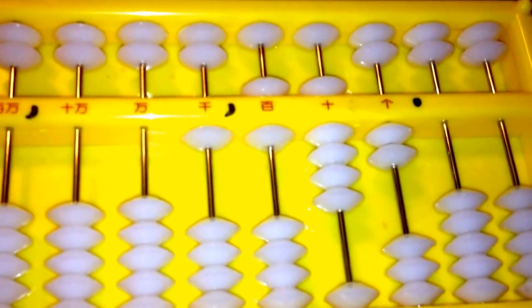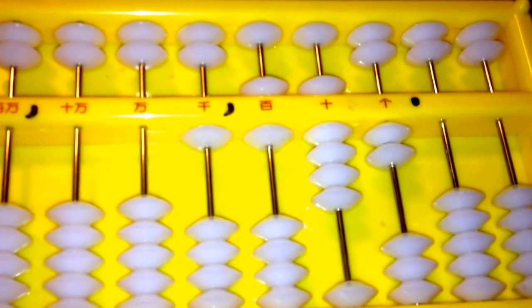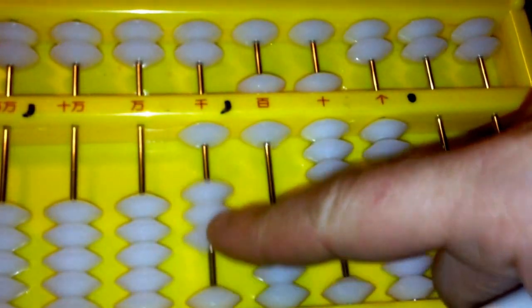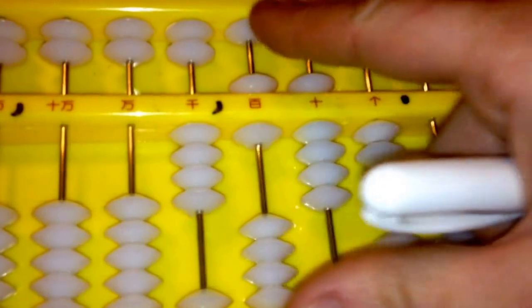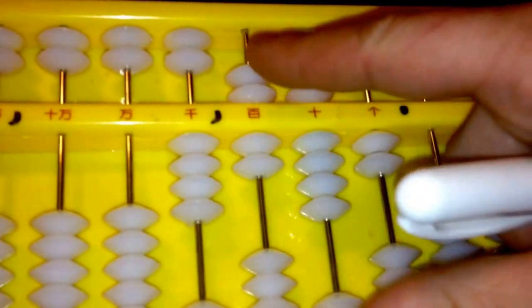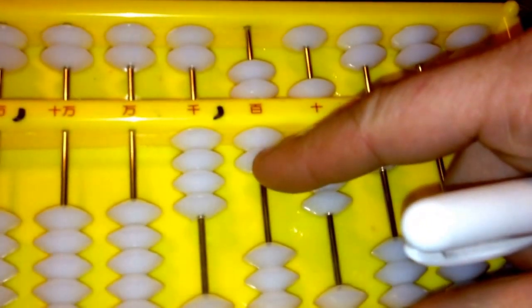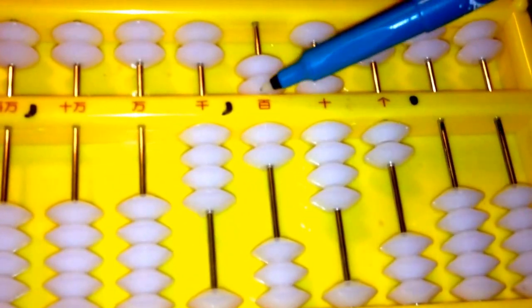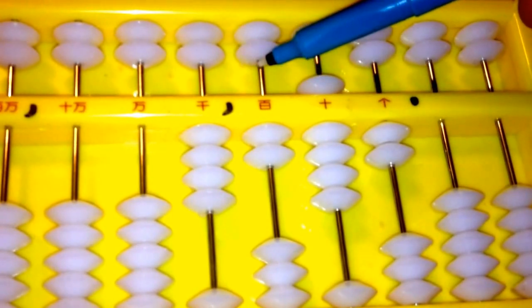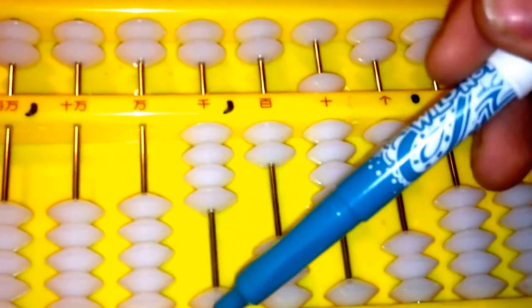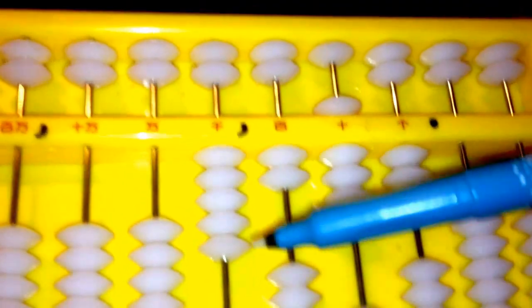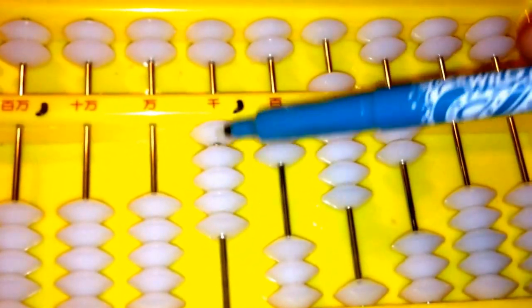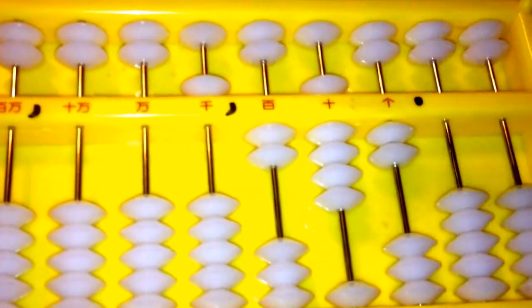Then our next multiplication is 9 times 4, which is 36. So we need 3 over here, and then we need another 6 here. So 5 and 6. Well, we have 10 up here in our heavenly beads. We need to move that over, carry that over to here. Now we have 5 down here. We need to consolidate those to a heavenly bead.